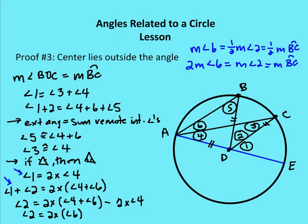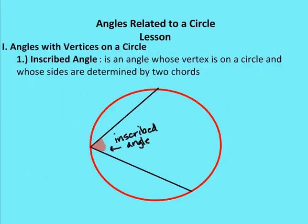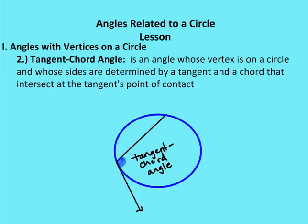That's it for the first installment of angles related to a circle. In this topic, we talked about angles whose vertex lies on the circle and their relationship to the arc length cut by the two chords, or by the tangent and the chord.